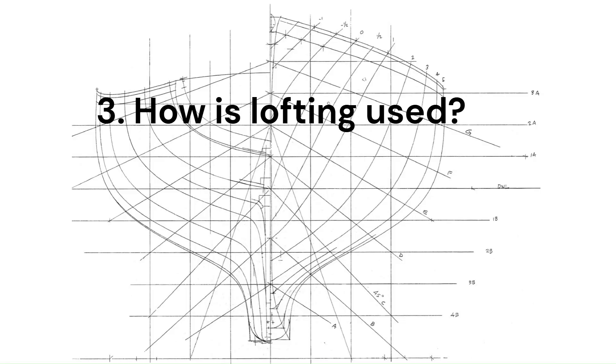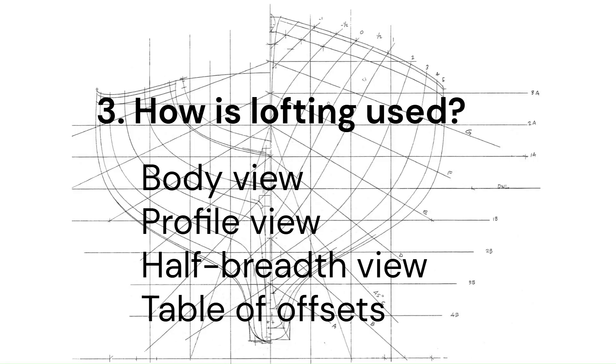Three, how is lofting used? Whatever type of boat design, there are usually three types of major planes: body view, profile view, and half-breadth view, plus a table of offsets. Of course, there are other drawings describing various things.